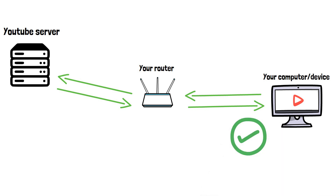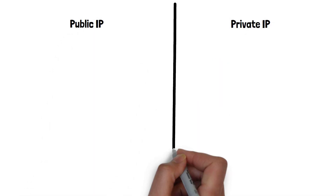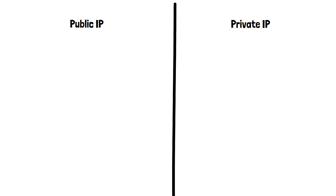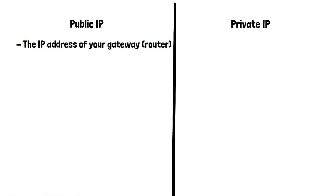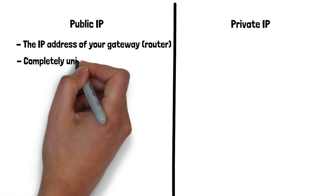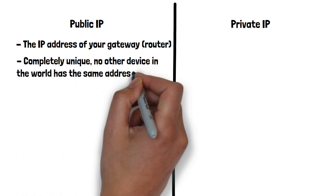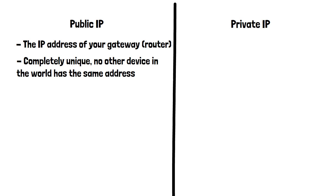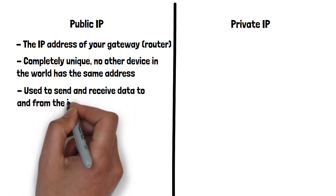There are two types of IP address: a public IP and a private IP. A public IP is the IP address of your gateway to the internet — in most cases this is a router. The address is completely unique and not shared by any device in the world. This is the address that your router will use to send and receive data to and from the internet.